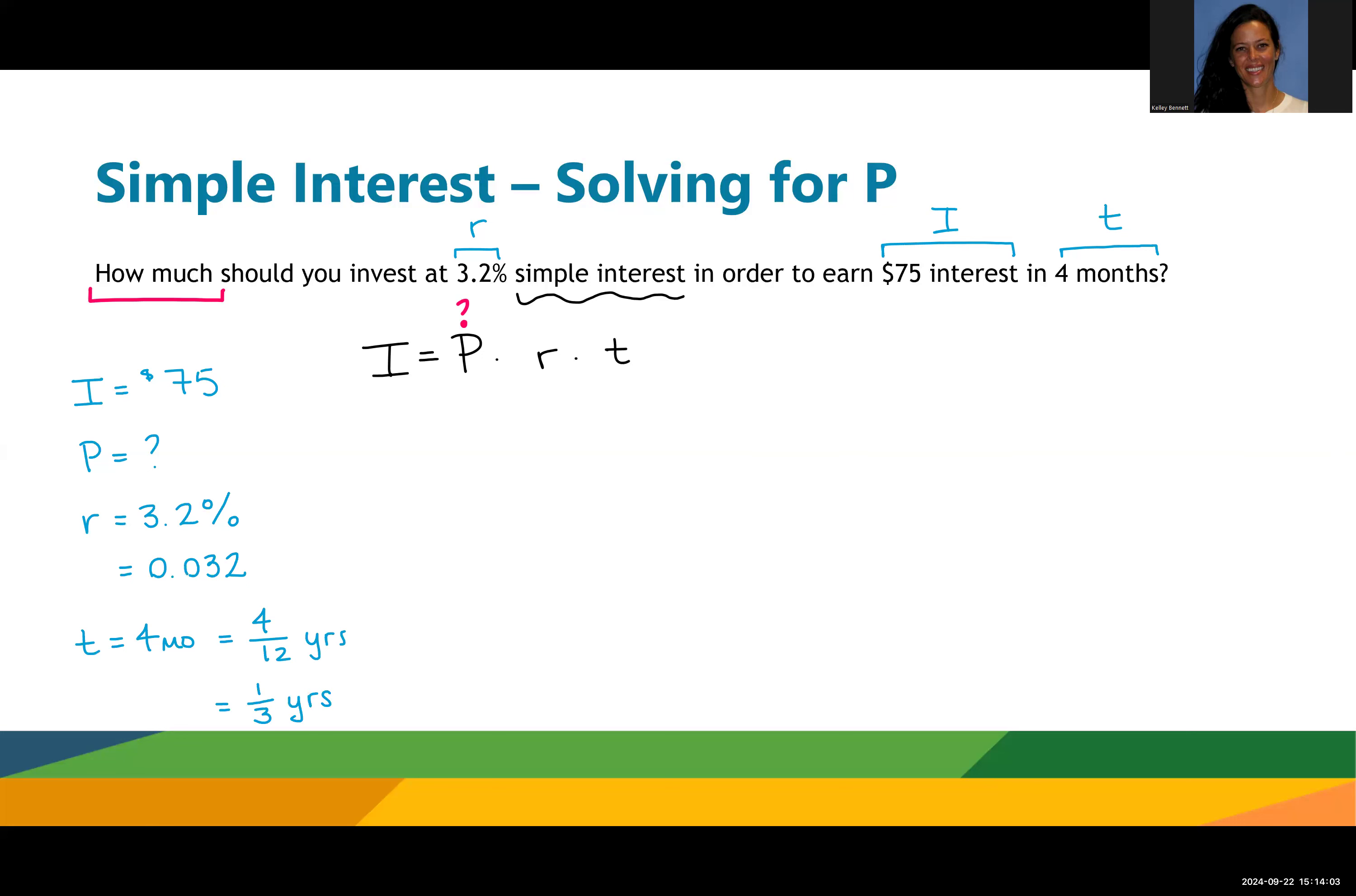Now that I have my values, I can plug these into my formula. 75 equals P times 0.032 times one third. Let's go ahead and start on the right, 0.032 times one third.